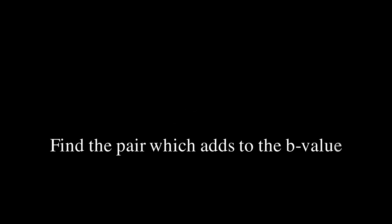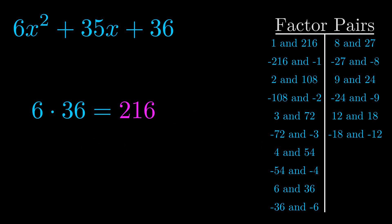The b value is the coefficient on the x term — that's the middle term, the one that we haven't done anything with yet. And really this is the only factor pair that we need.